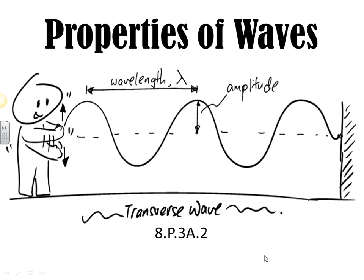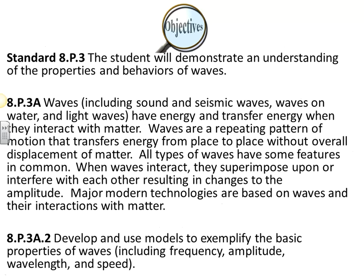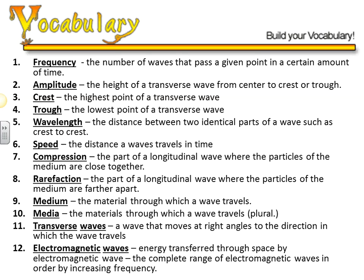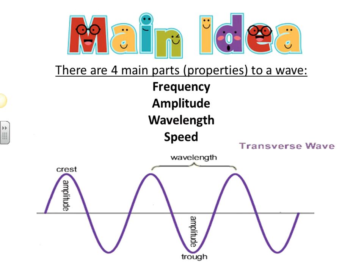Hey folks, in this presentation I'm going to summarize the properties of waves or parts of a wave. Here are some key terms that we're going to use throughout this presentation, so if you'd like to pause, review, or refer back to, please do so. The four main parts of a wave that we're going to outline in detail are frequency, amplitude, wavelength, and speed.